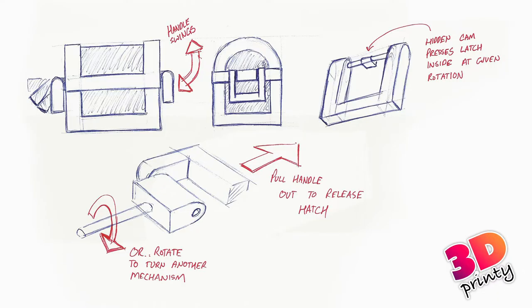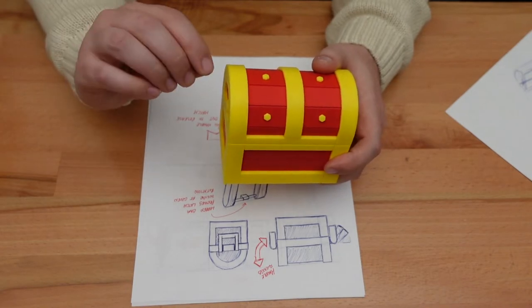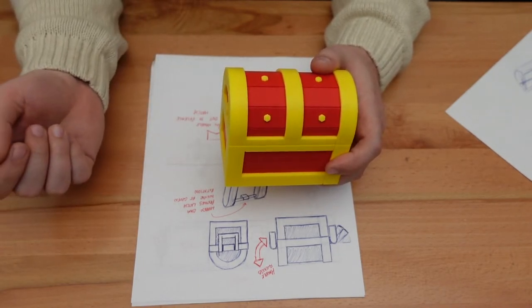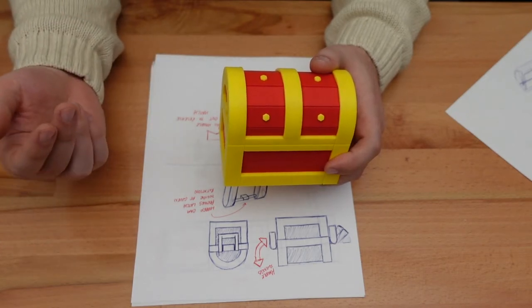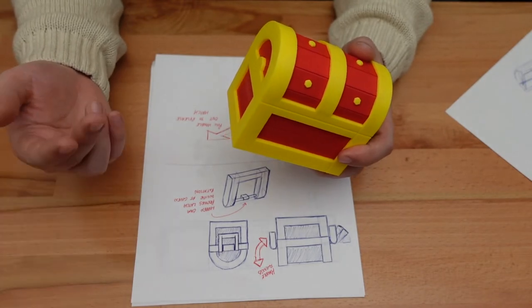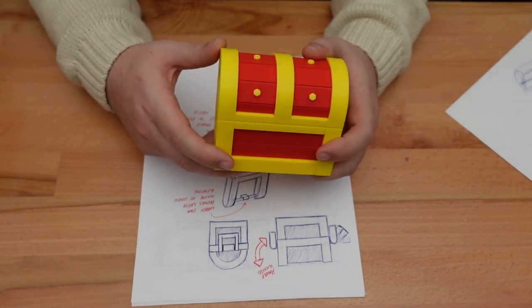I also played with adding handles on either side of the chest that you could pull, twist, or swing. The potential combination of moves between both handles could make for a fiendish challenge. Unfortunately, they didn't work with the Zelda chest theme, but it's an idea I plan to explore elsewhere.